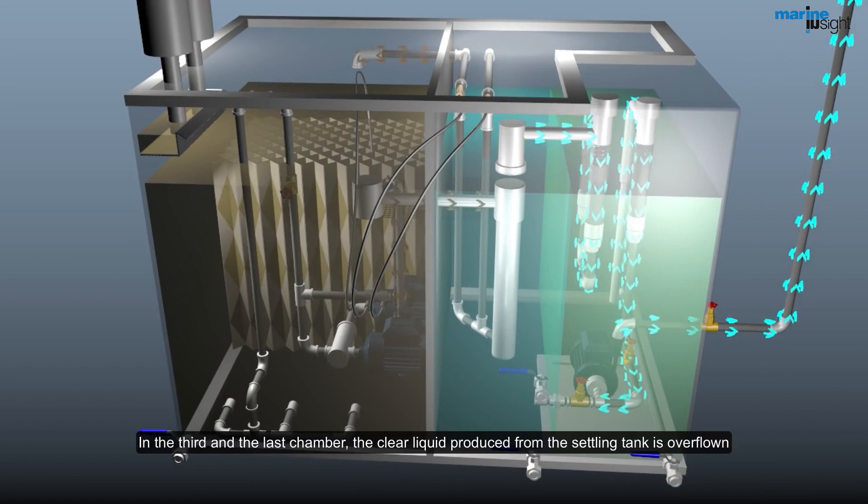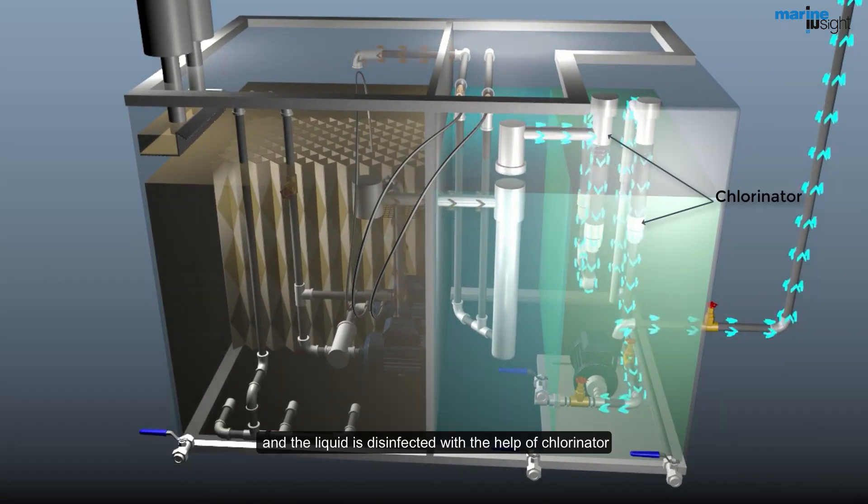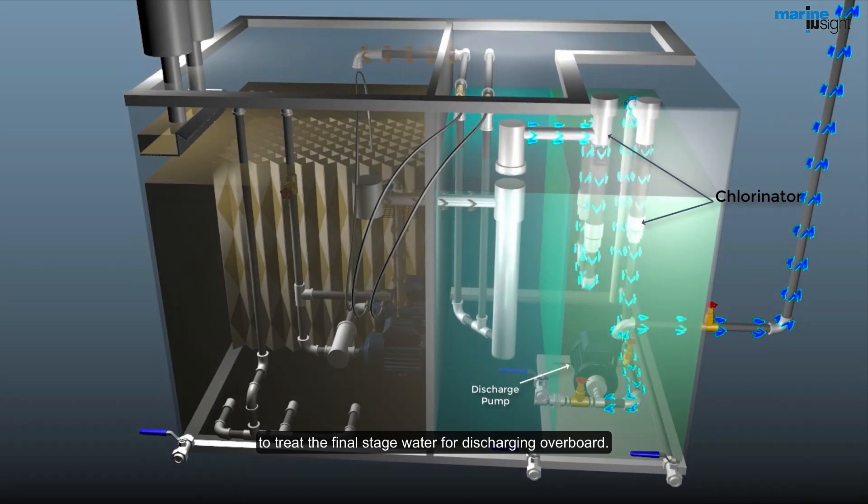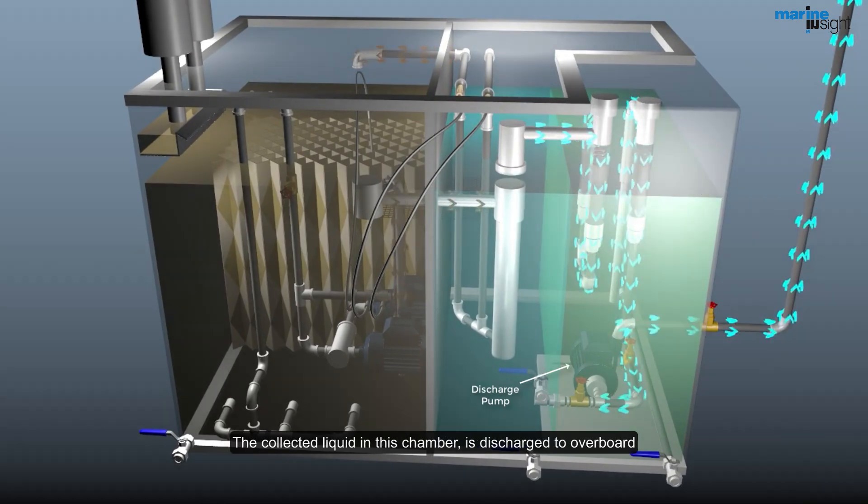In the third and the last chamber, the clear liquid produced from the settling tank is overflown, and the liquid is disinfected with the help of chlorinator to treat the final stage water for discharging overboard. The collected liquid in this chamber is discharged to overboard or settling tank, depending on the geological position of the ship.